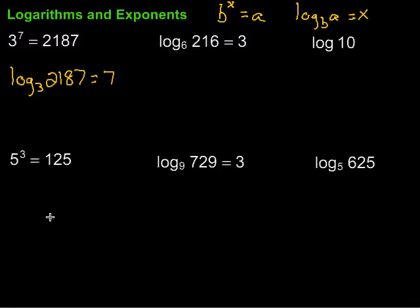5 to the 3rd power equals 125. Writing that as a logarithm, it's going to be the log base 5 of 125 is equal to 3. And again it makes sense, 5 to the 3rd power gives us the 125.